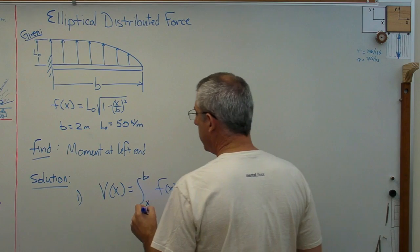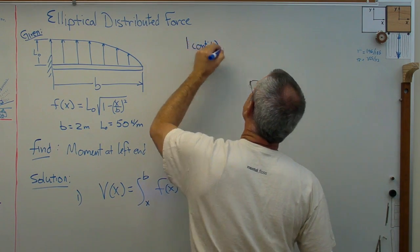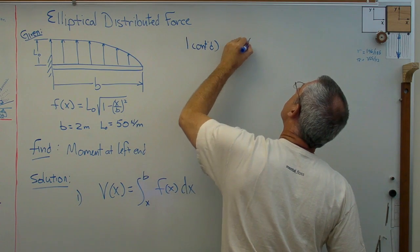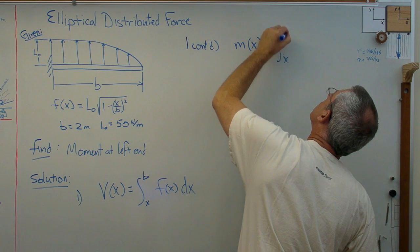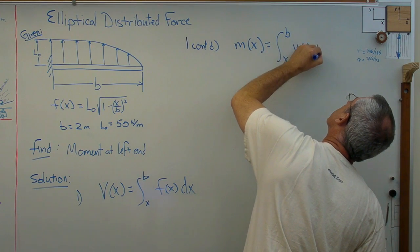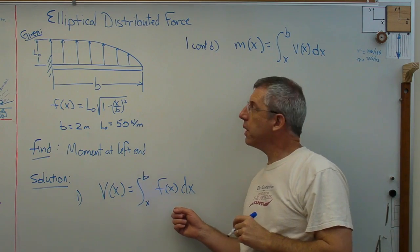And the next step, we'll do is one continued, I guess, is then say m of x, moment of x, at any point x is the integral from x to b of v of x dx. Now, having done this, this is a pretty complicated integral.